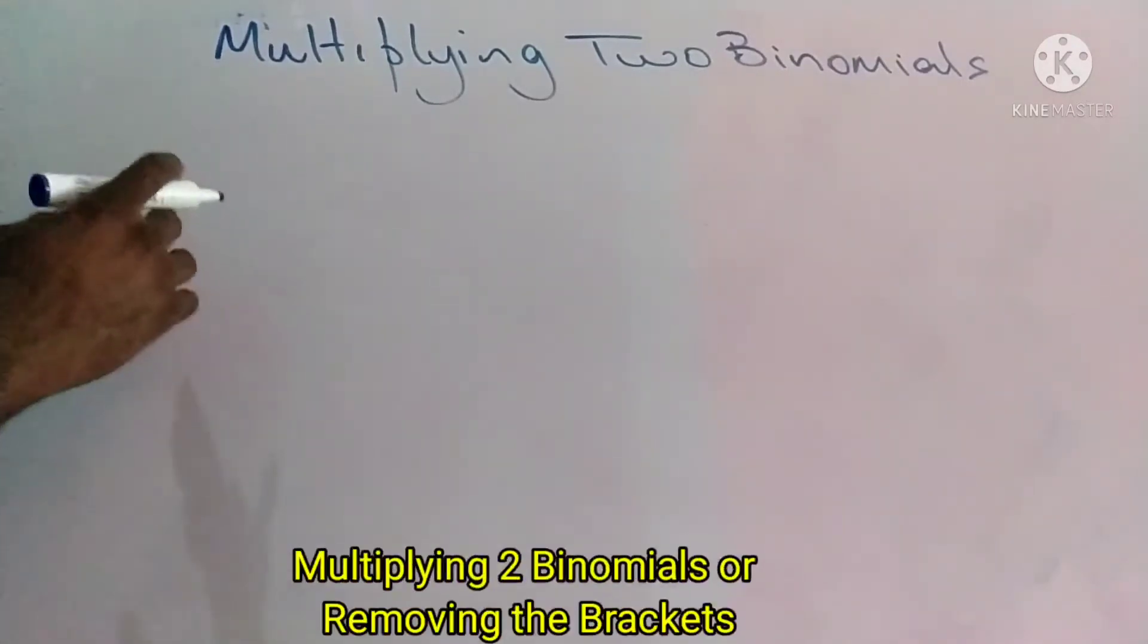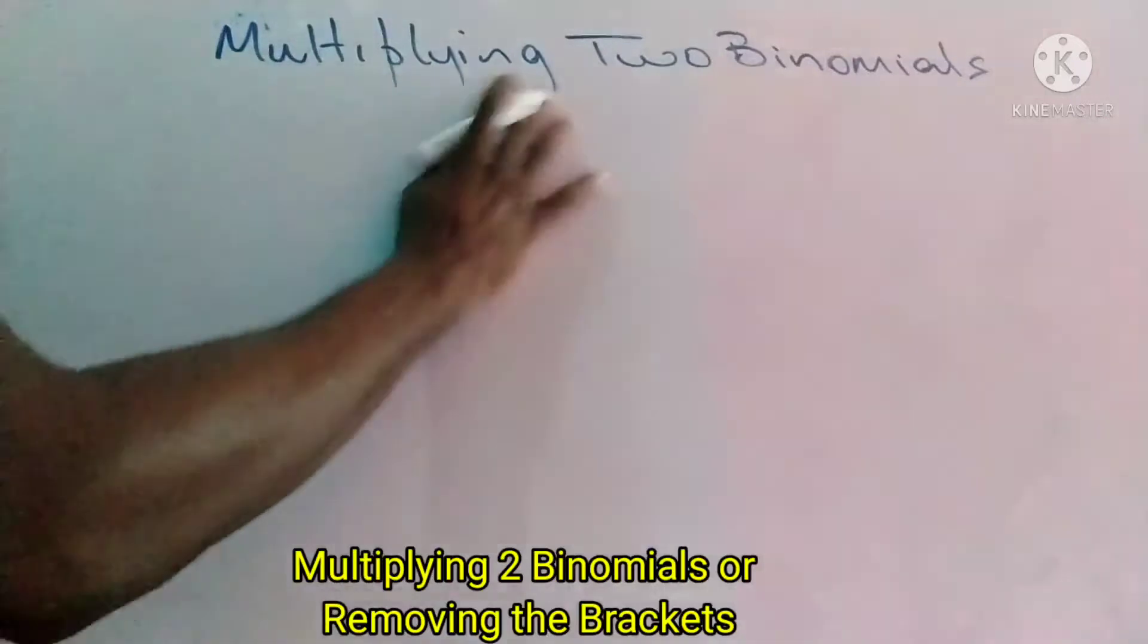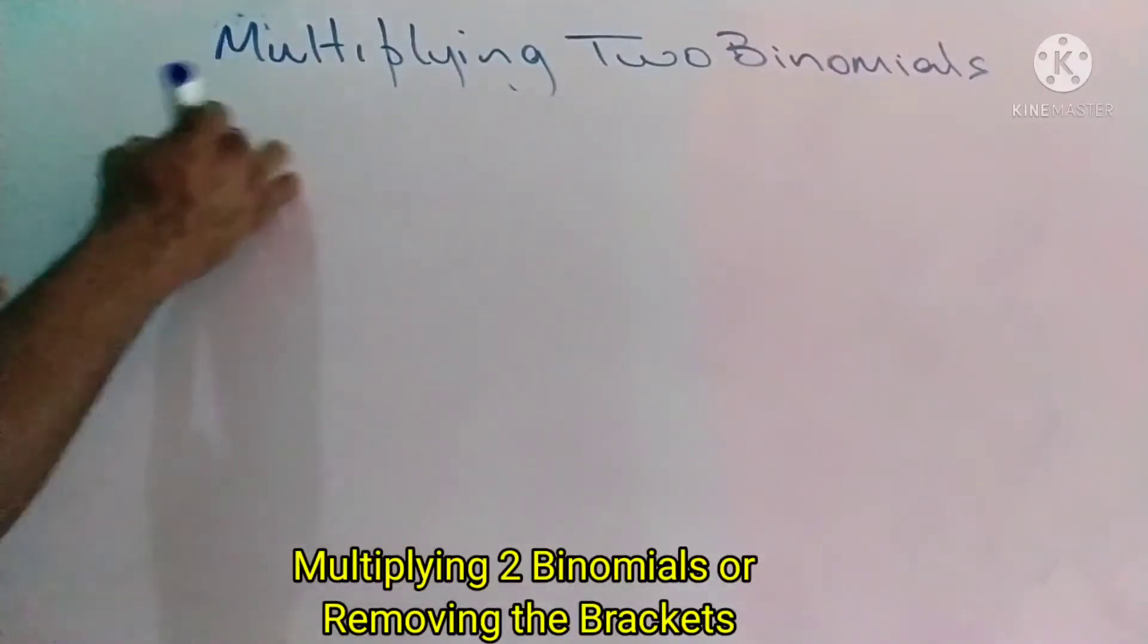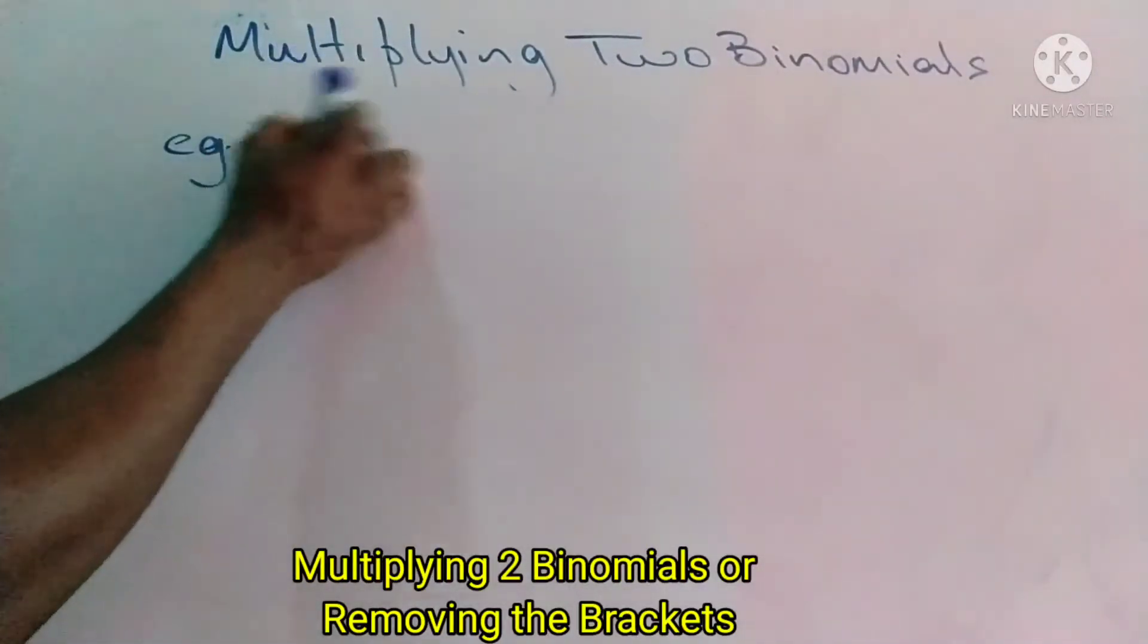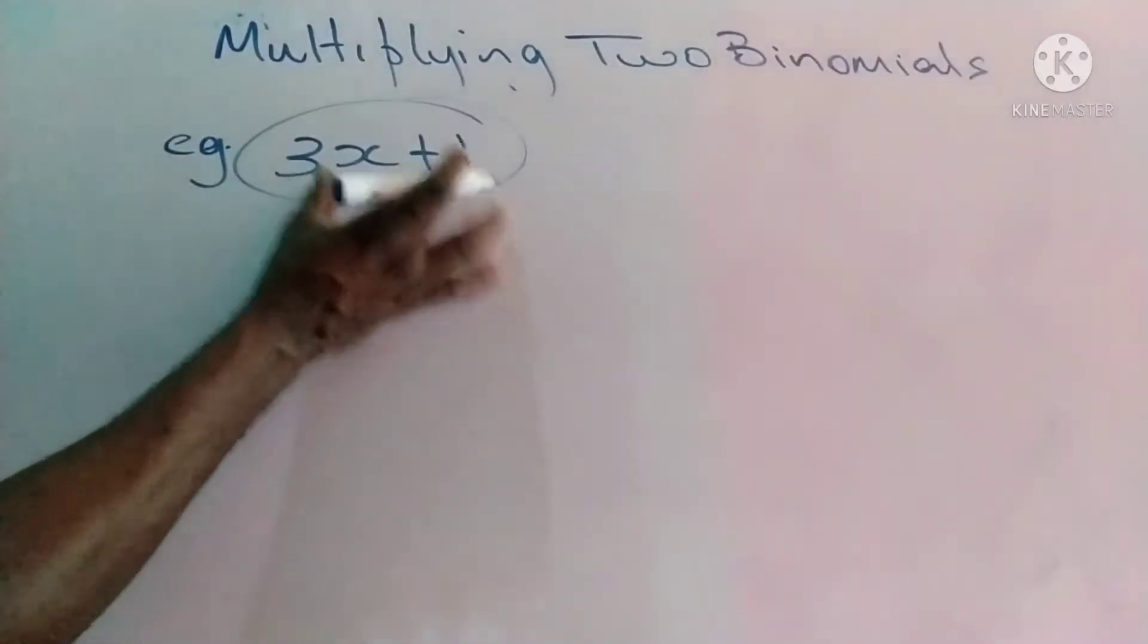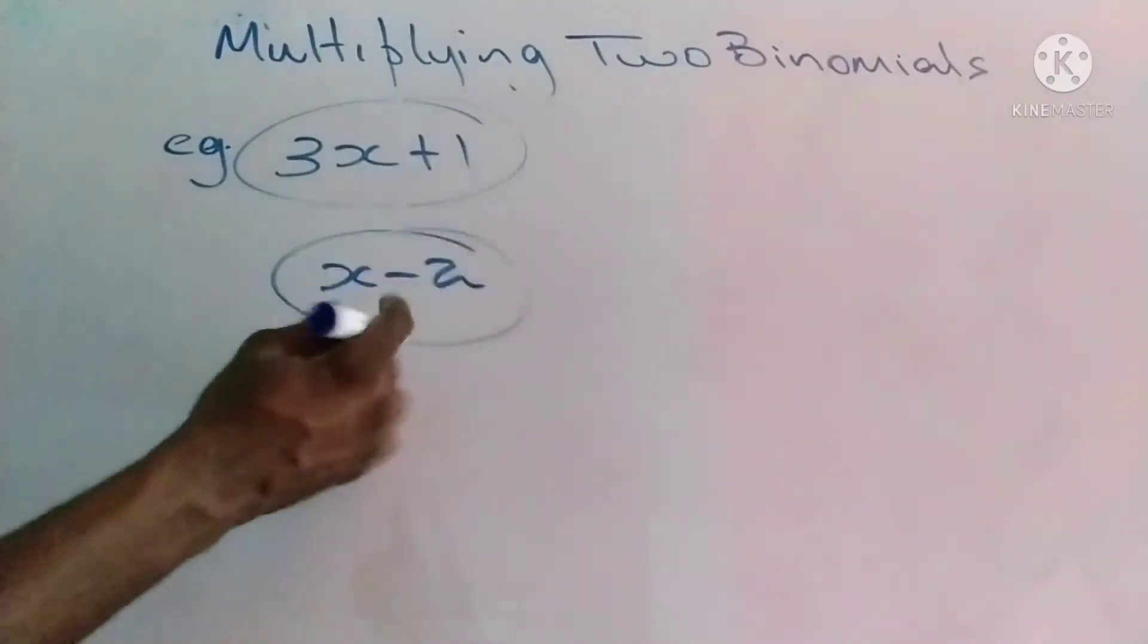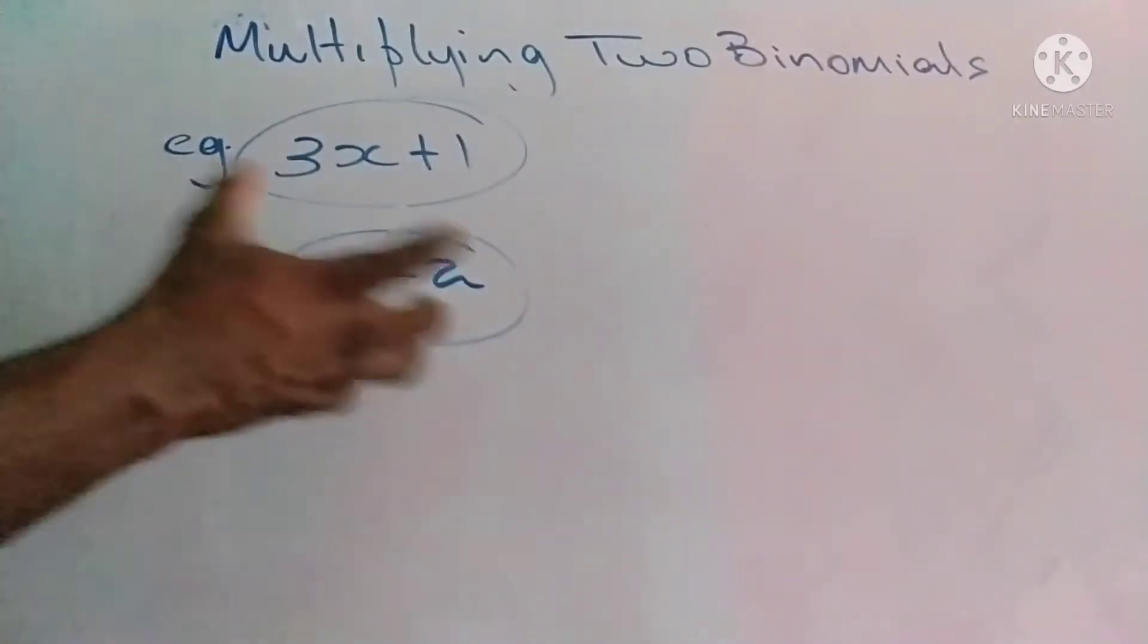Multiplying two binomials and removing the brackets. What are binomials? Examples of binomials include 3x plus 1 together, we call this a binomial. We're looking at two terms working together. X minus 2, two terms working together, so we call them binomials.